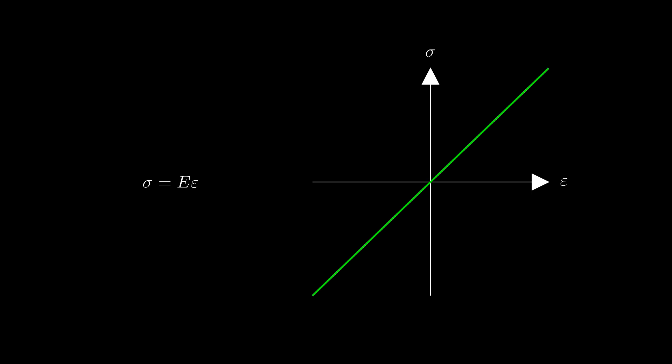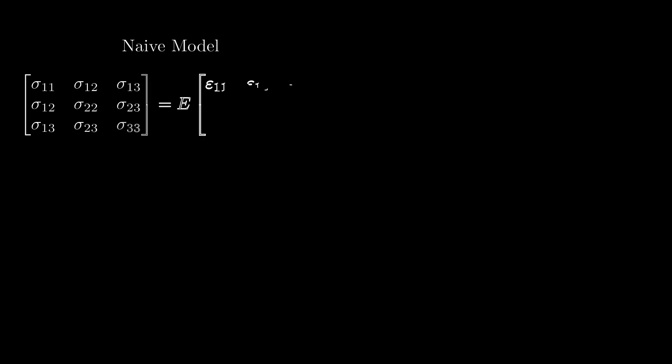The linear elastic material model in 1D simply assumes a linear relation between the scalar stress and the scalar strain, where Young's modulus E is a material parameter determined from experiments. But how can we formulate a linear elastic material model in 3D? In 3D the stress and the strain are described by 3×3 tensors. A somewhat naive idea would be to simply assume that the stress tensor is equal to the Young's modulus times the strain tensor.